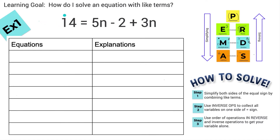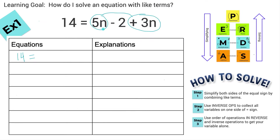On the left-hand side there's only one term, so there's nothing to combine. I can write 14 equals. But on the right-hand side I do have like terms. Like terms are either just plain old numbers — those are called constants — or the same variable. Notice I included the plus when I circled the 3n because that plus belongs to what comes after it. The minus belongs to the 2, and the 3n has a plus. So we can combine these: 5n's plus 3 more n's is 8n's, and we drop down the minus 2.